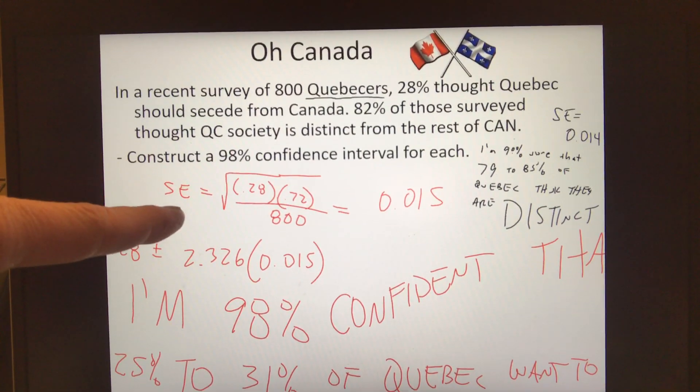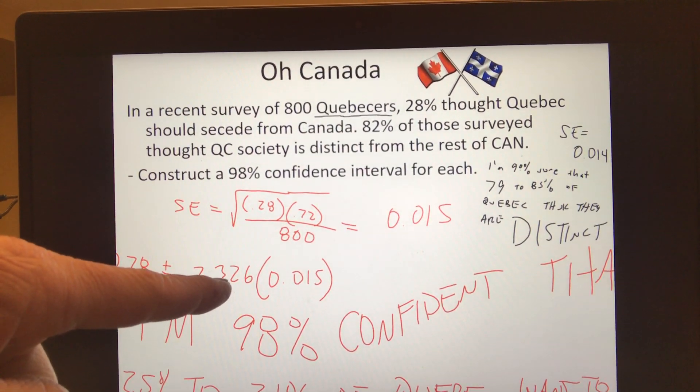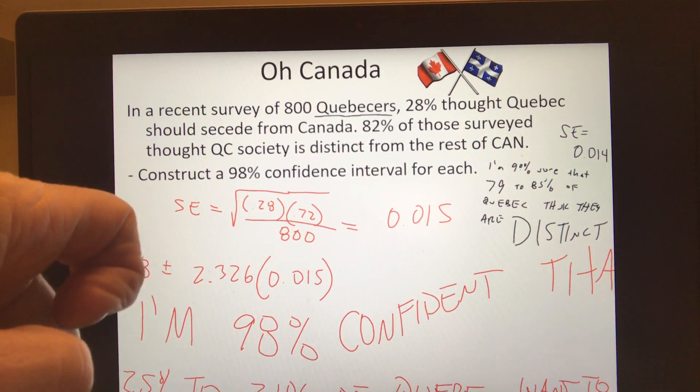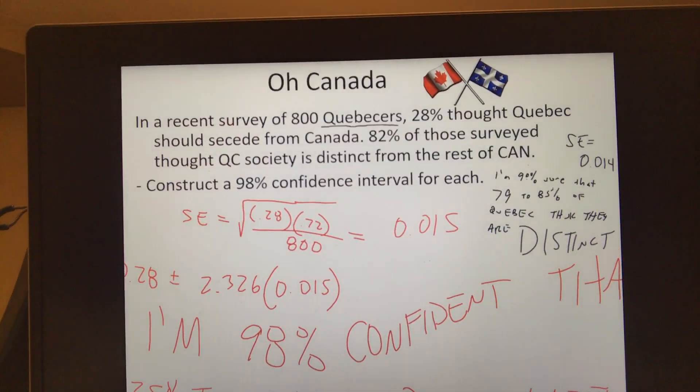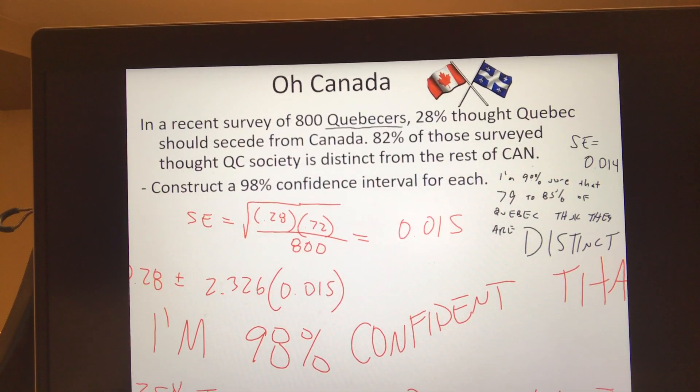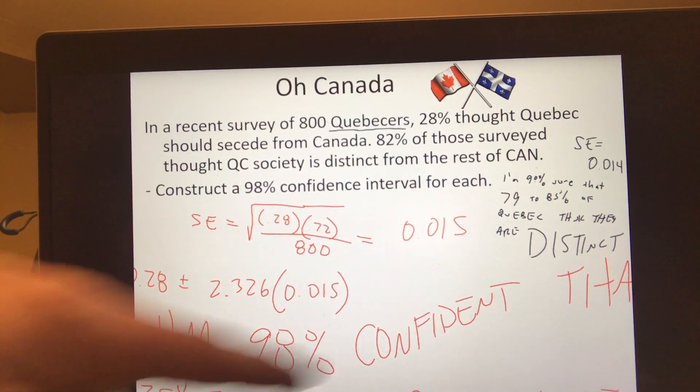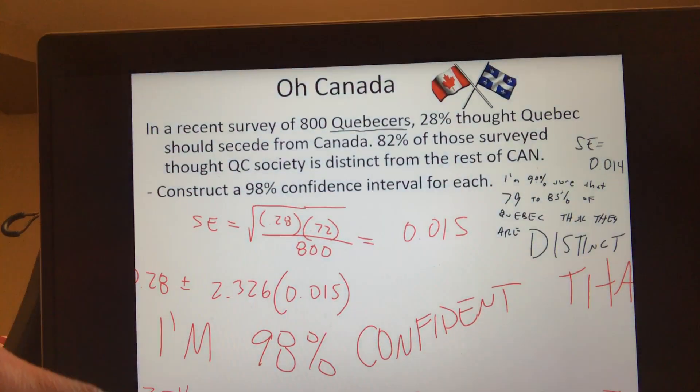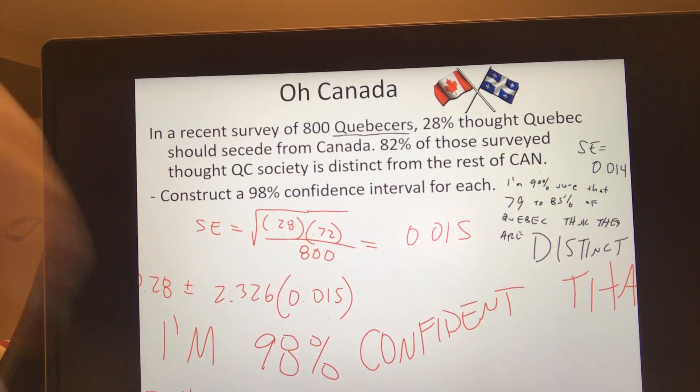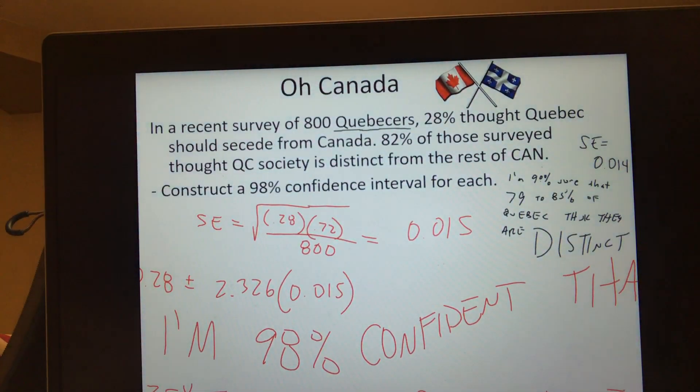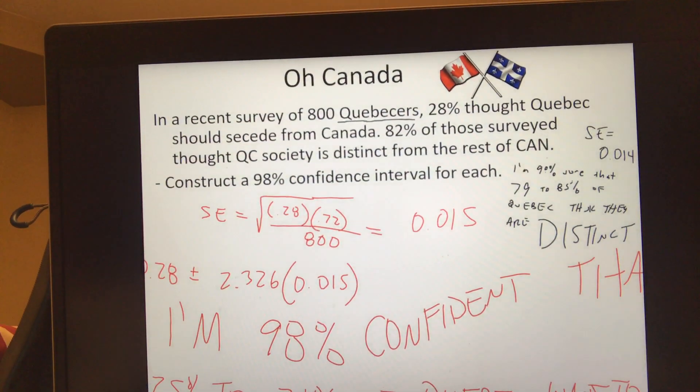So I'll calculate my standard error, 0.015, use that with a 98% confidence, 2.326, multiply that out, add it to 0.28 - this is my number of Quebecers who thought they should secede from Canada. And there it is, beautiful words: 98% confident that 25 to 31% of Quebecers want to secede. The other one was between 79 and 85% because you had a slightly different standard error. Hopefully that makes sense.